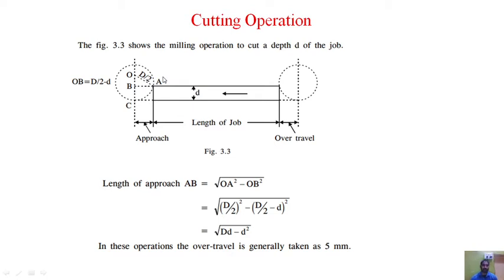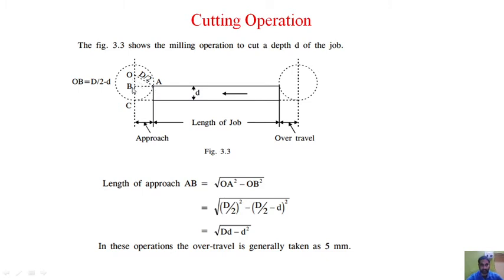For the cutting operation in milling (making grooves or slots), initially the cutter does not start from the exact edge of the job. It must take some extra initial position — called approach — before the cut starts, and some extra movement after the cut ends — called over travel. We construct a right-angle triangle OBA: OA is the radius D/2 (hypotenuse), and OB is the radius minus the depth of cut.